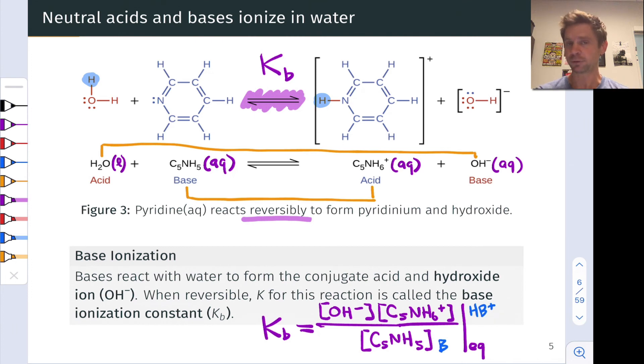And again, this particular constant is known as the base ionization or basicity constant for the base. And it's a measure of the base strength. The larger this value is, the further to the product side the reaction goes at equilibrium, and the stronger the base. The higher the hydroxide concentration at equilibrium is another way to think about this.